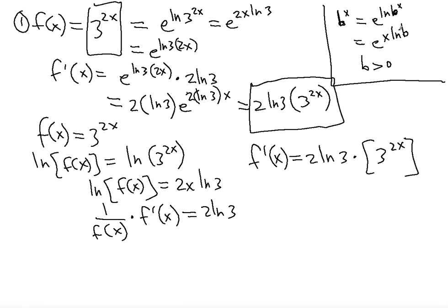So in the first method we used the top right-hand corner equivalent substitution to differentiate easily, and in the second method we used logarithmic differentiation. Now let's move on to the second example. I'm going to use the first method here, since we've already covered logarithmic differentiation in other videos — but you can use that method for your own practice.